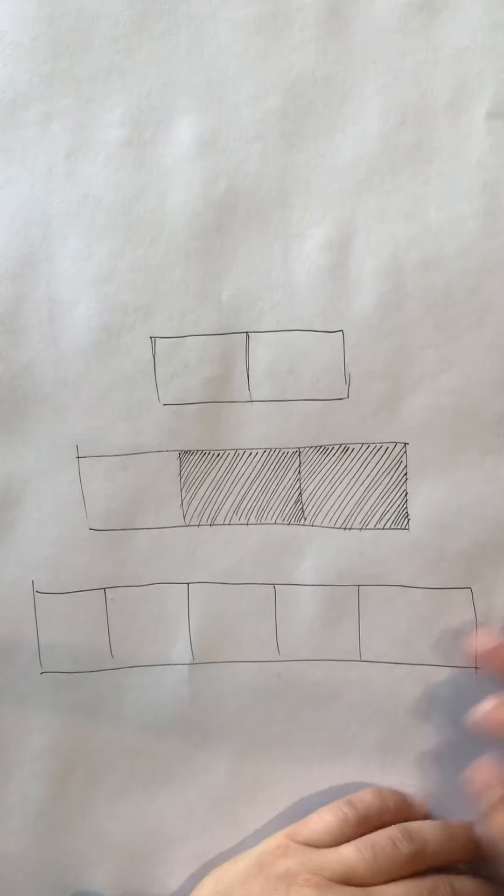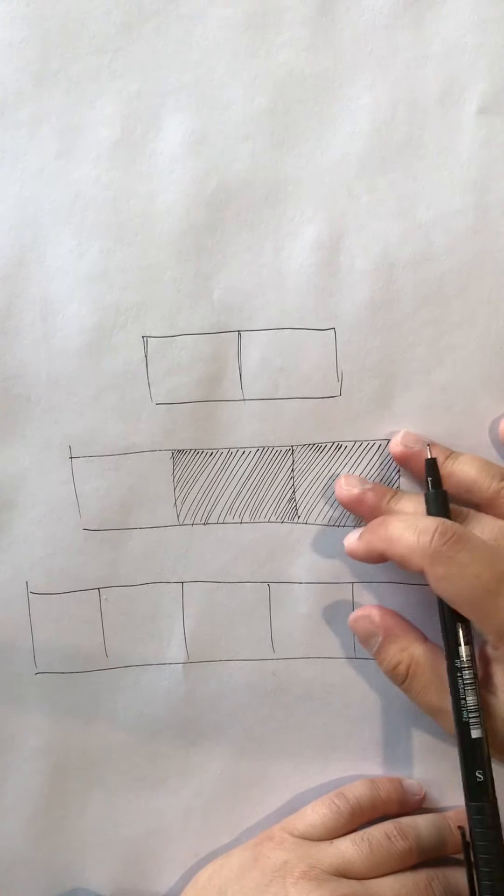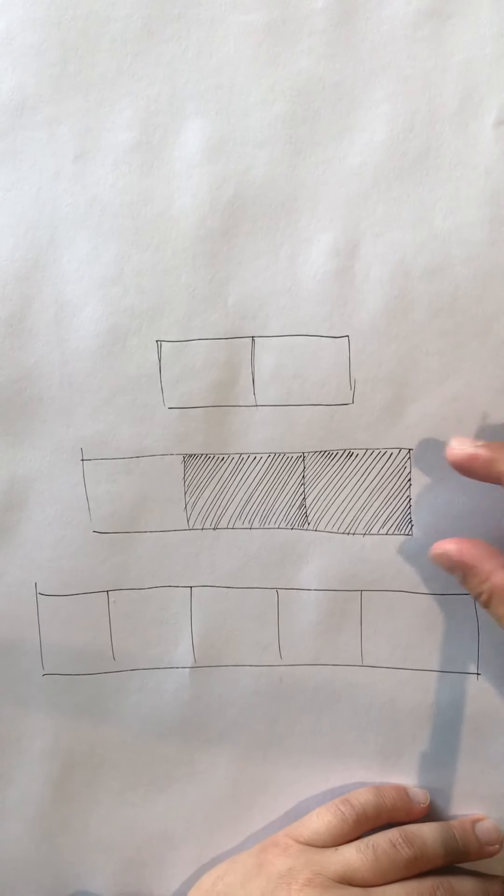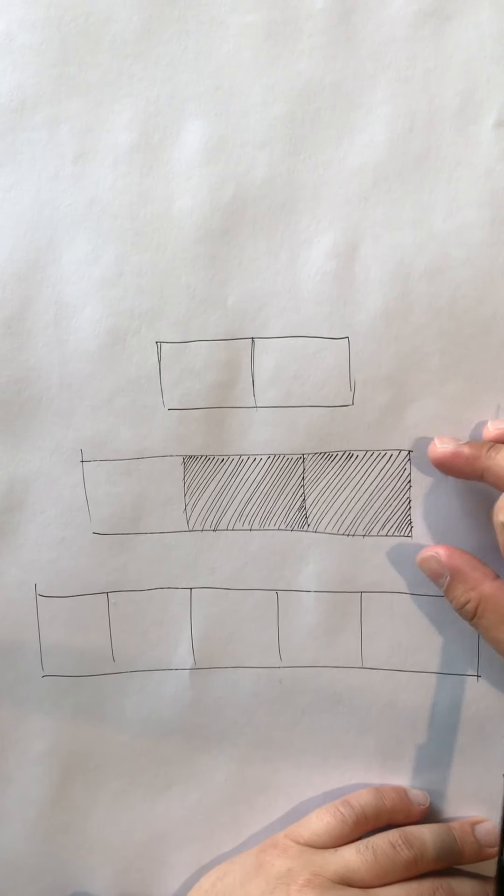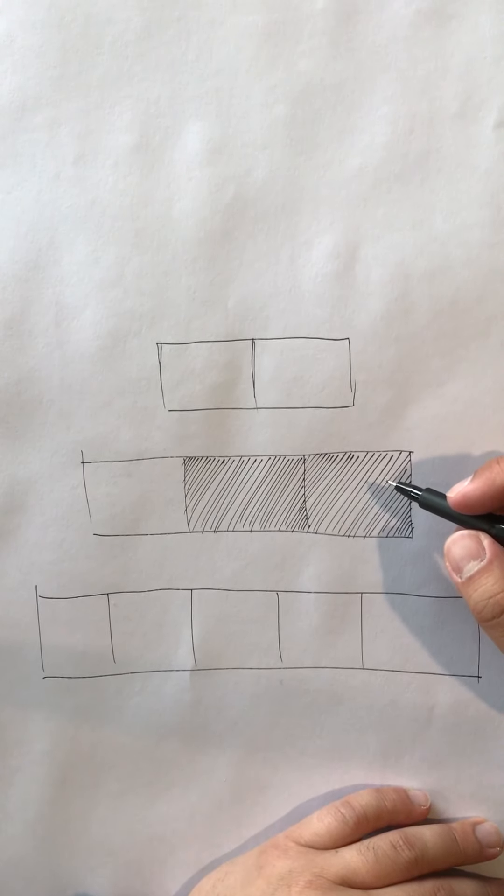Don't worry if you mess up the spacing. If you do it over a larger area it'll be less noticeable. When you are hatching you're looking very close, but when you look further away it won't matter.